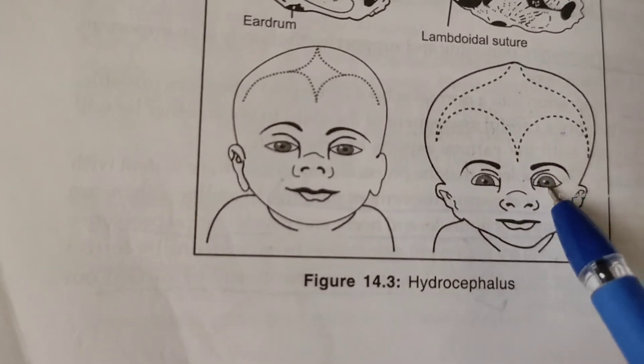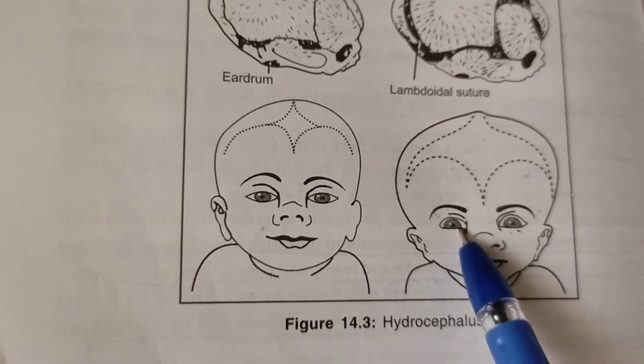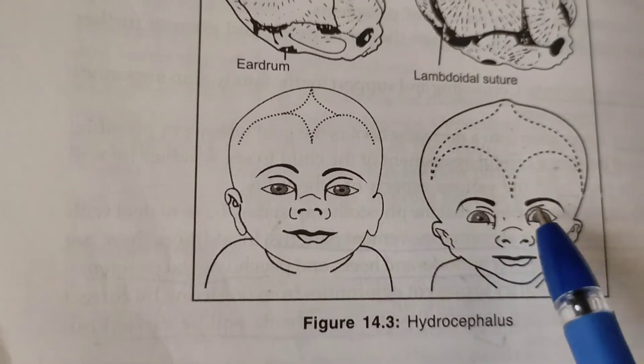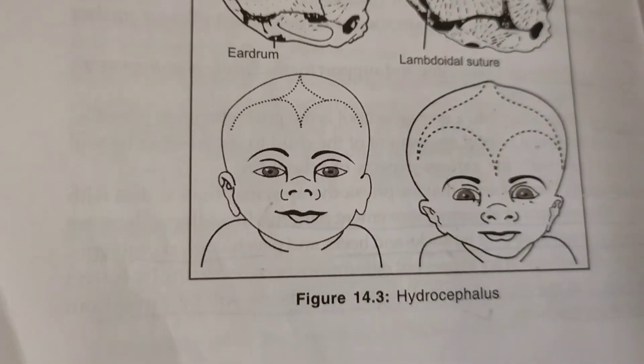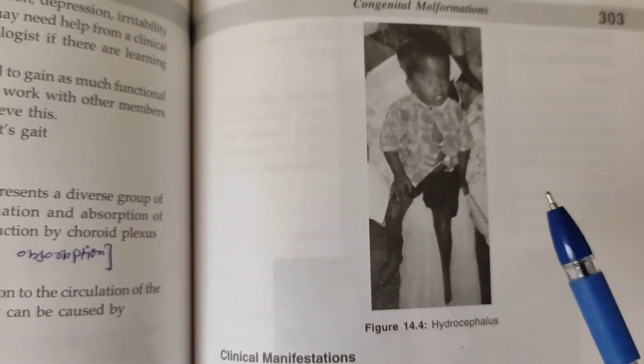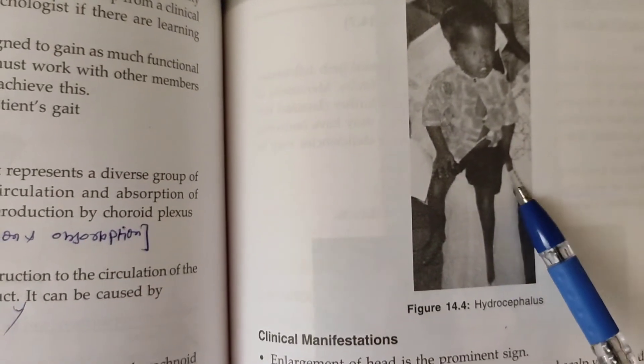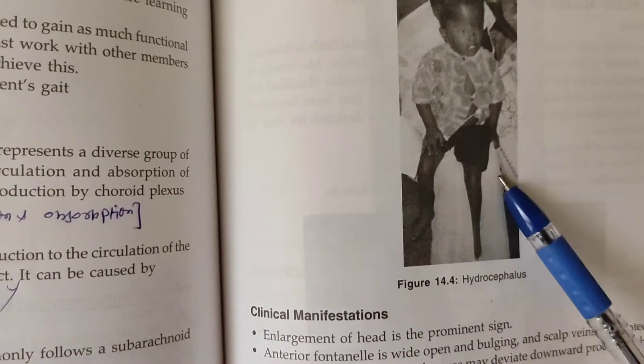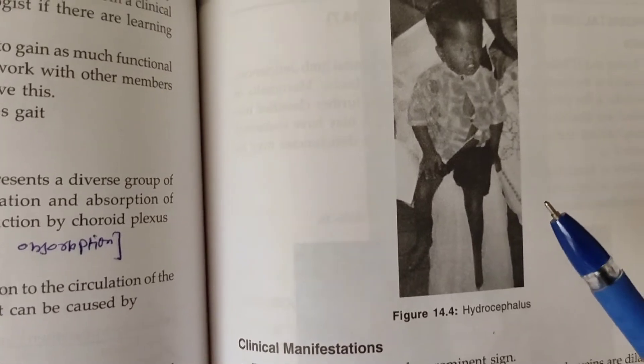Next, vomiting, headache, deterioration of consciousness, and disturbance in muscle tone, reflexes, and coordination. Percussion of the skin may produce a cracked pot or McEwen sign, including separation of the sutures, papilledema, abducens nerve palsy, and pyramidal tract signs.